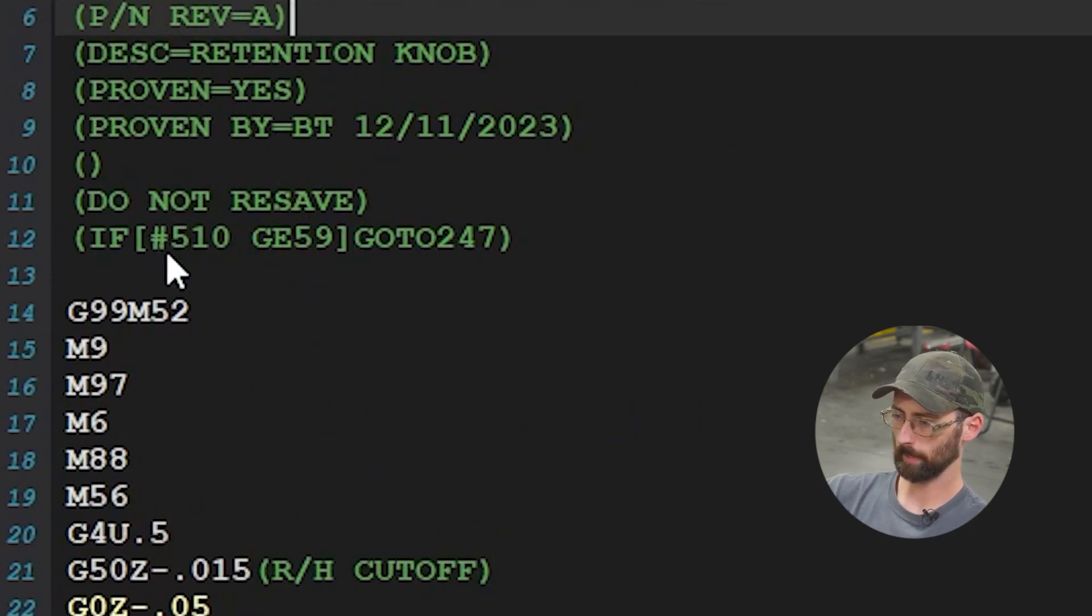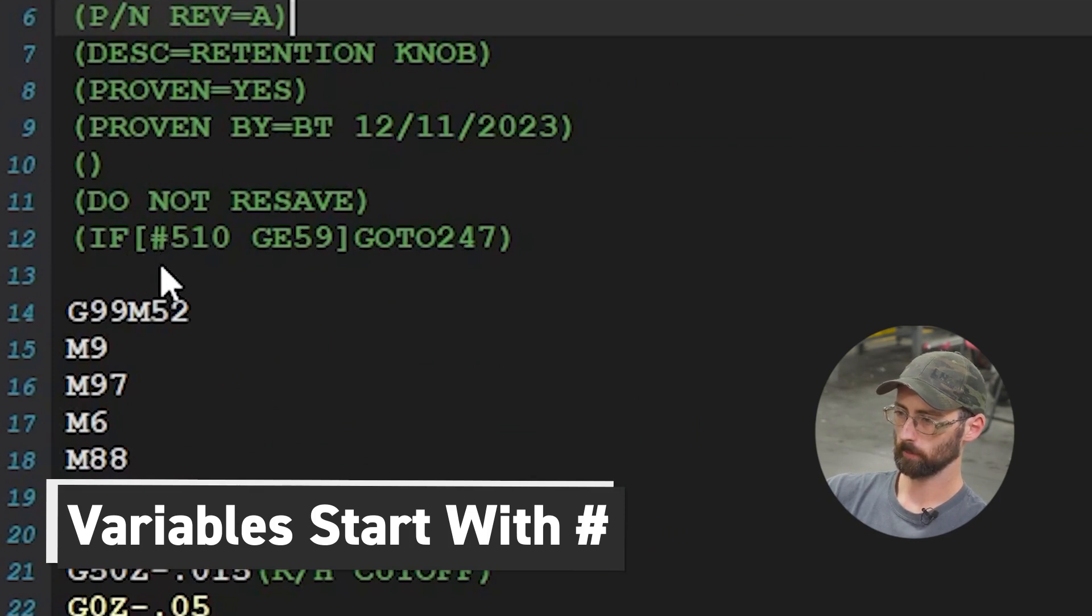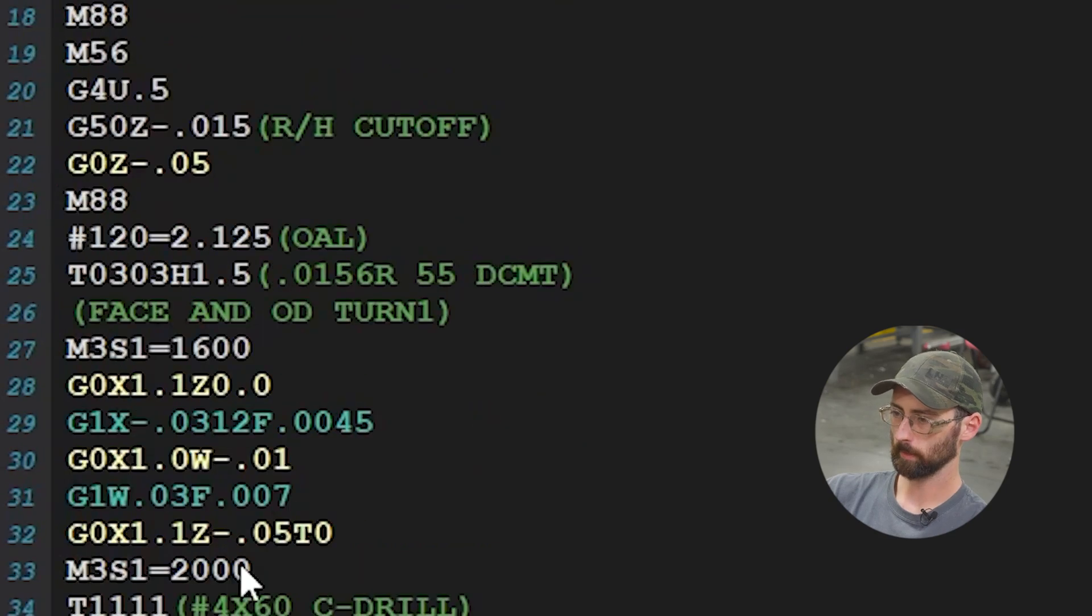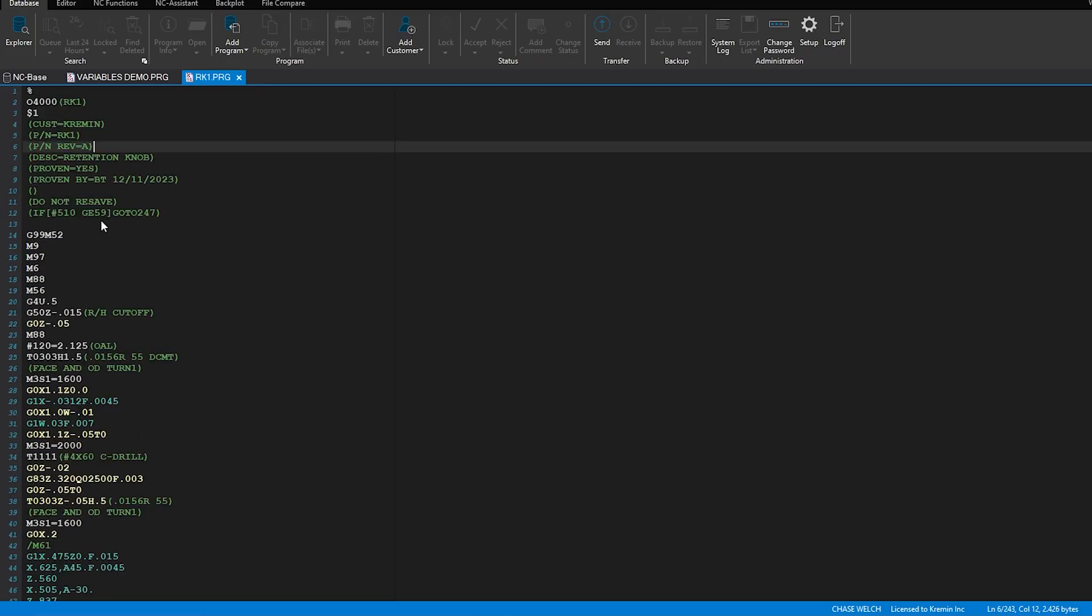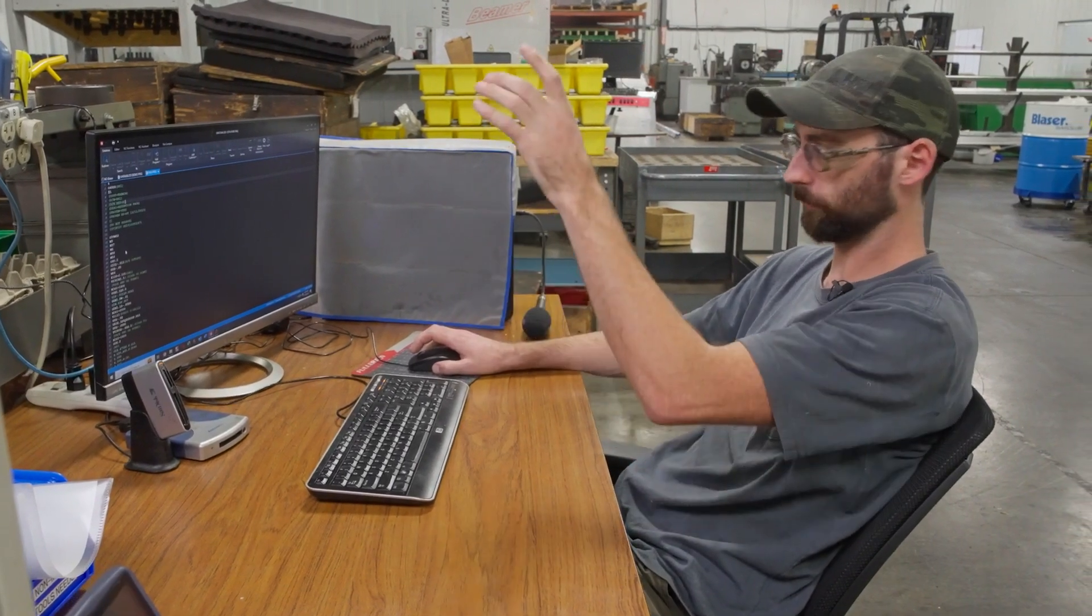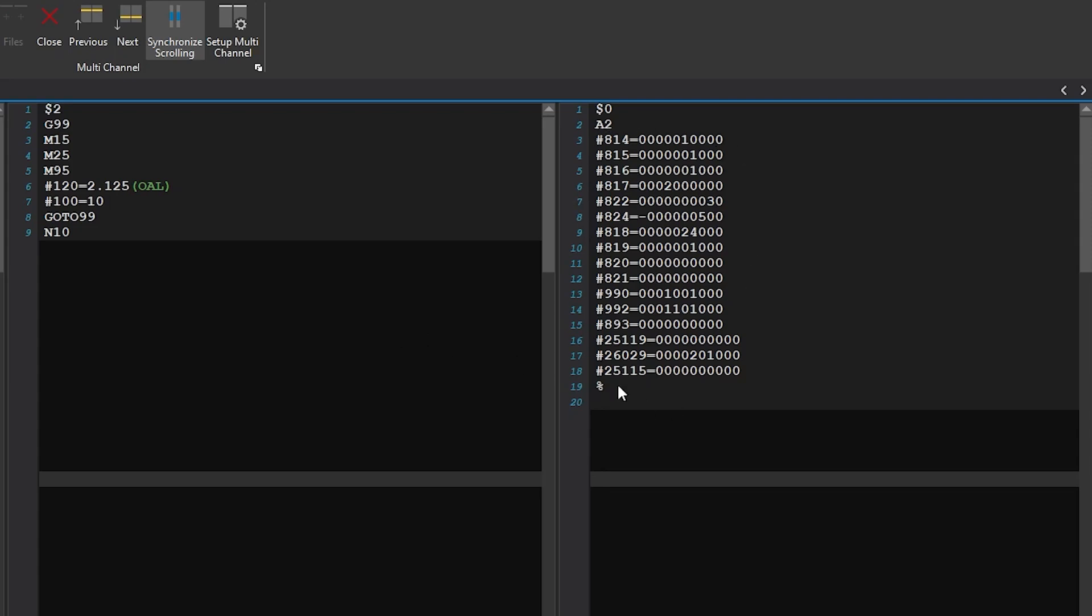This is the variable, anything you see with this pound or hash symbol - #510, #120 - we're using these as variables. We can change it in one place and then the program will do the math for us and make our lives ten times easier.